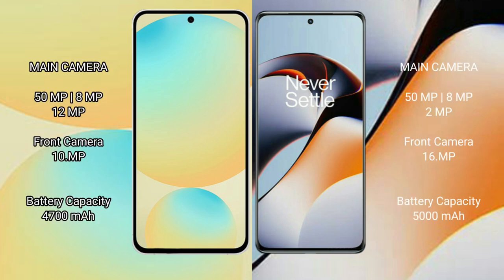Samsung Galaxy S24 FE features a rear triple camera setup of 50MP plus 8MP plus 12MP. For battery, the Samsung Galaxy S24 FE has a 4000mAh battery with 25W fast charging support, while the OnePlus 11R has a larger 5000mAh battery with 100W fast charging support.